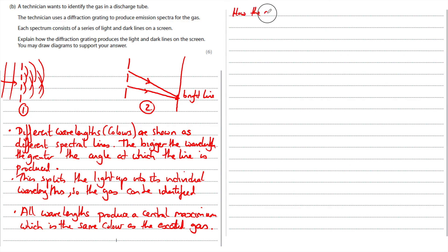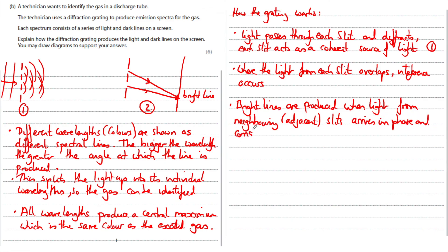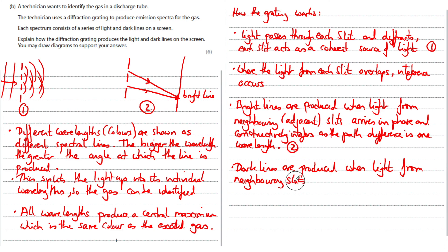Now I've explained that, the next thing is to get that key information across about why bright lines are produced and why dark lines are produced—how the grating works. Light passes through each slit and diffracts. Each slit acts as a coherent source of light, which is shown in diagram 1. Where the light from each slit overlaps, interference occurs. Bright lines are produced when light from neighbouring, adjacent slits arrives in phase and constructively interferes, as the path difference is one wavelength. Dark lines are produced when light from neighbouring slits arrives out of phase and destructively interferes, as the path difference is half a wavelength.